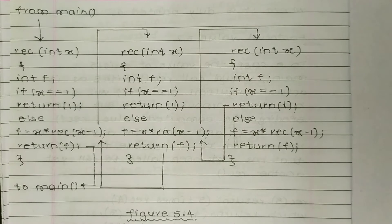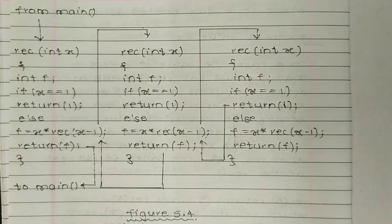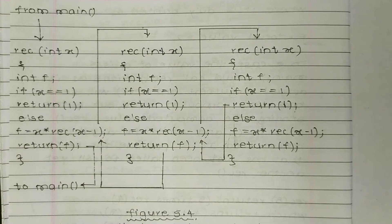From main we go to rec - that is recursion. Inside rec, int f is declared. If x is equal to 1, return 1. Else, f is equal to x multiplied by rec(x-1), and return f. Then return to main. These steps will be repeated.